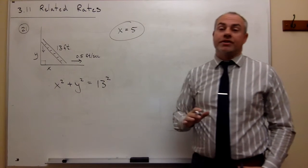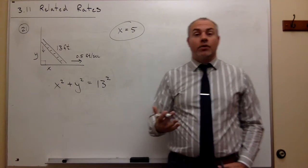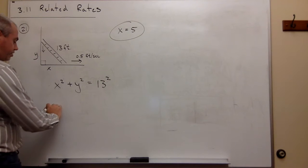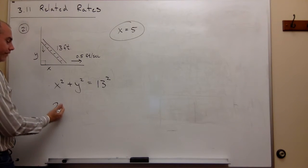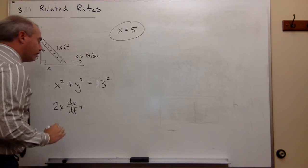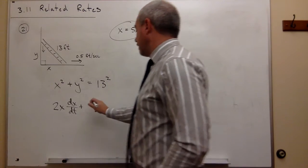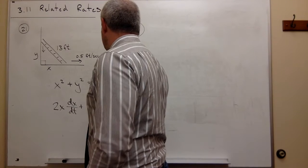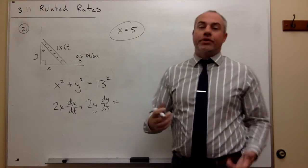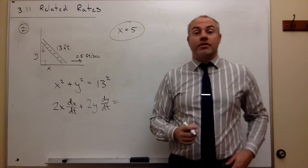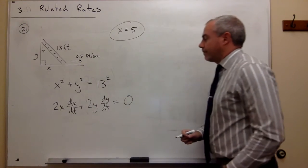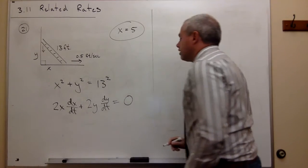Now we can take the derivative of this equation with respect to time t. The derivative of x squared is 2x times dx/dt. The derivative of y squared is 2y times dy/dt. The derivative of 13 squared — well, 13 squared is just a constant, and the derivative of a constant is zero.